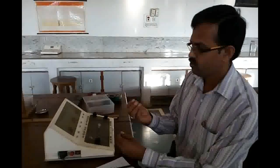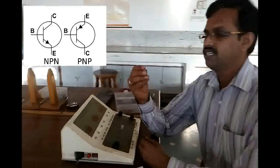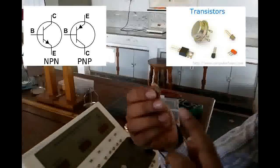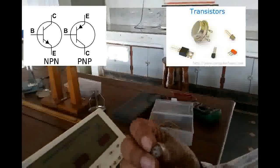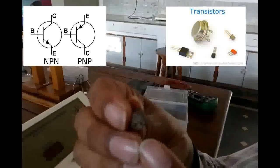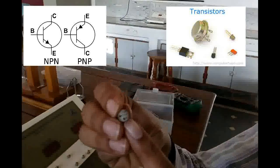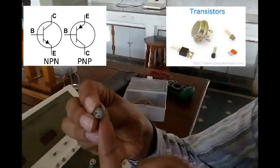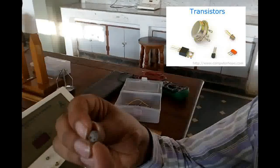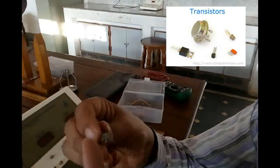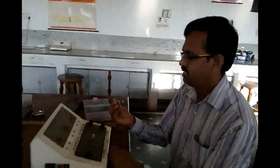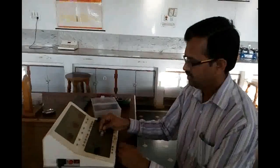A transistor is a three terminal semiconductor device with terminals called emitter, base, and collector. To identify the emitter, there is a sharp edge or notch on the transistor. The terminal closest to this notch is the emitter, the next one is the base, and the last one is the collector. This transistor is connected here on the board.